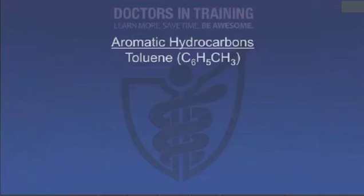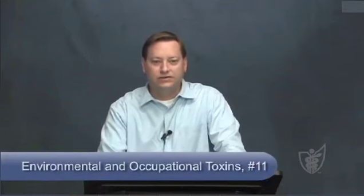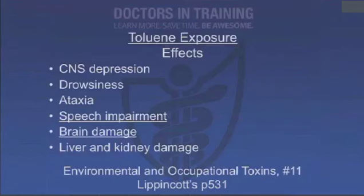Toluene is a cousin to benzene — C6H5CH3 — essentially methylated benzene. It's a solvent used in paint thinner and furniture polish. The number one exposure is auto emissions, and it can be huffed for a slight high. It causes CNS depression: drowsiness, ataxia, impaired speech, and eventually brain damage. Like the others, it can also cause liver and kidney damage.